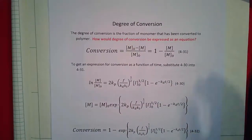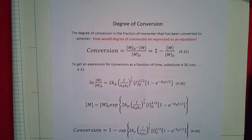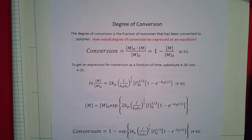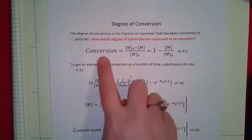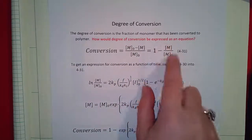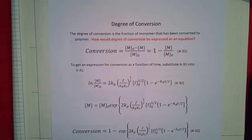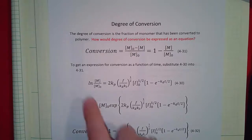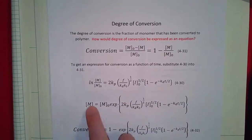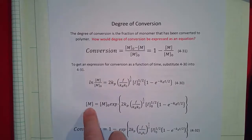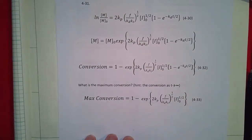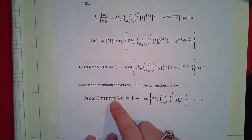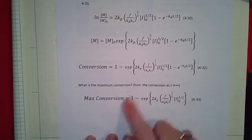By convention, people express things in terms of conversion — it's like extent of reaction. The degree of conversion is the fraction of monomer that's been converted into polymer. We can write an equation for that and isolate the monomer concentration. Our conversion equals this equation. We can also think about the maximum conversion as t goes to infinity and figure out that number.